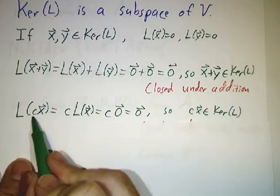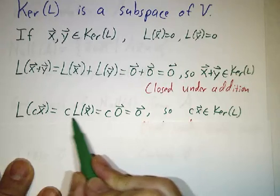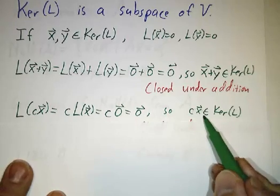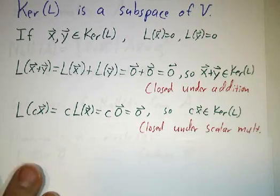Likewise, if we take L of a constant times x, that's a constant times L of x. So that's a constant times zero, which is zero. So the constant times x is in the kernel. It's closed under scalar multiplication.